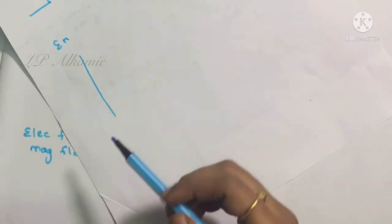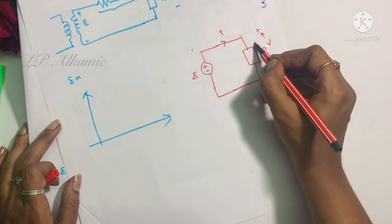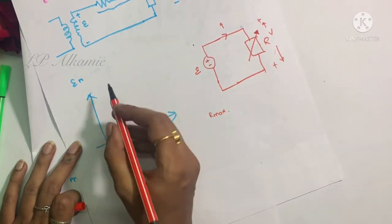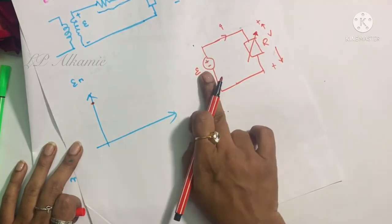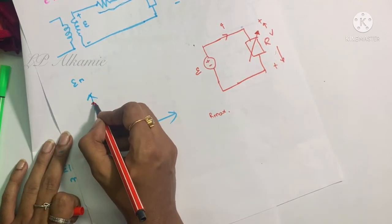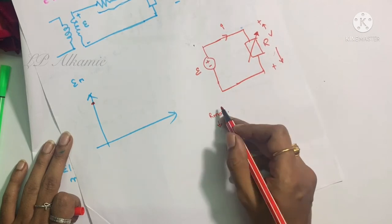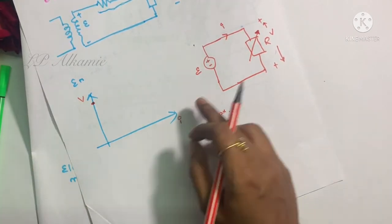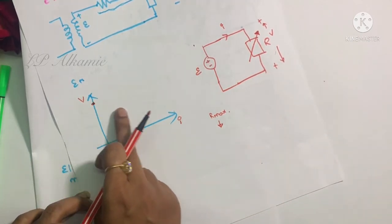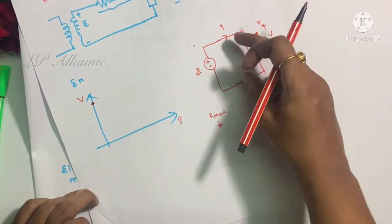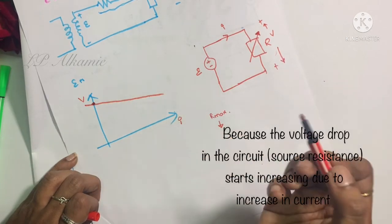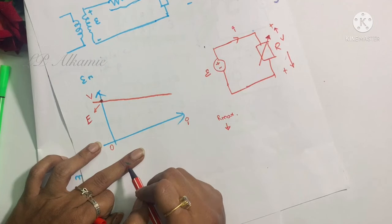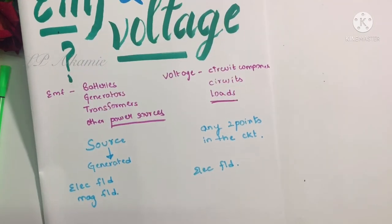If I plot a graph with a variable resistance: when resistance is at maximum, no current flows (I = 0), and the potential difference across the circuit equals the EMF of the battery — this is the starting point for voltage. As I decrease the resistance, current starts flowing and increases, while the voltage starts decreasing. Plotting this graph, the point where I = 0 corresponds to the EMF. So this graph clearly shows the relationship between current and voltage as resistance varies.